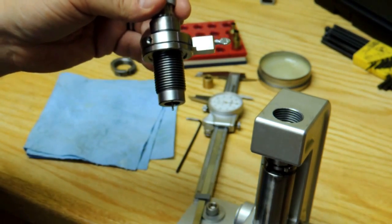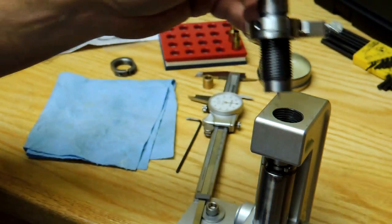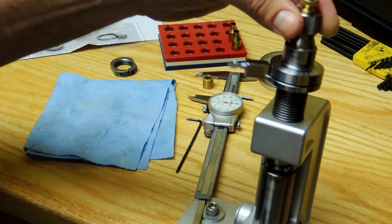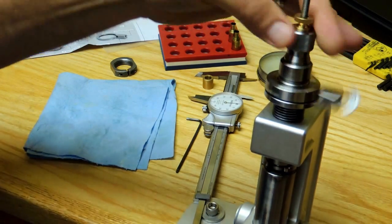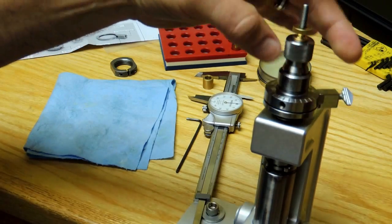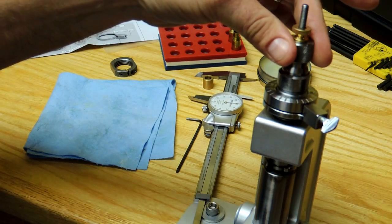Next, we run the ram on the press all the way up and thread the die into the press until it makes contact with the shell holder.